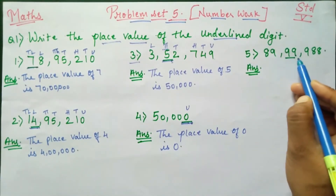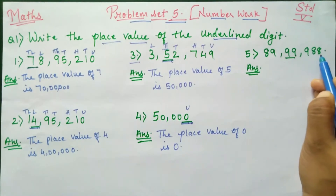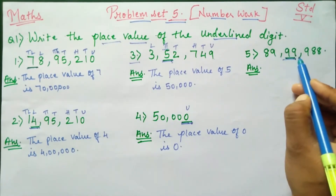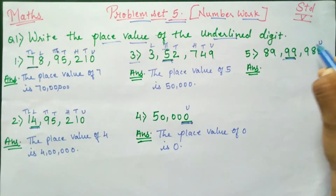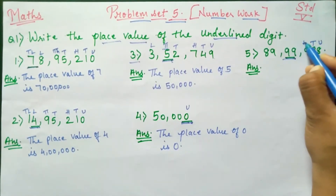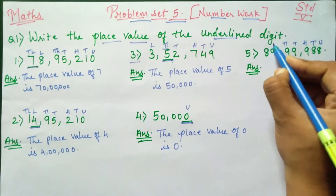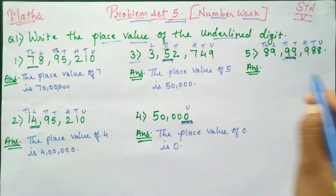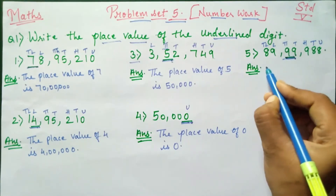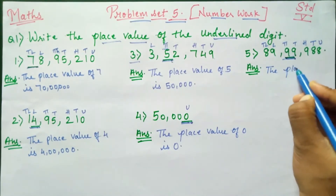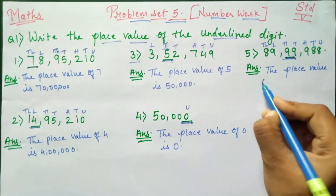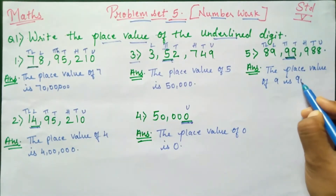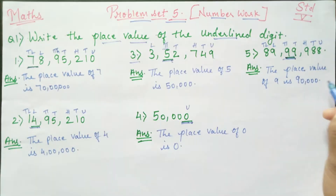Number 5: 89,99,988. Here they have underlined number 9. So to find out the place value, write first all the names of the place values — unit, tens, hundreds, thousands, ten thousands, lakhs, and ten lakhs above the numbers. And then we will get the underlined digit answer is 90,000. Therefore, the place value of 9 is 90,000, that is 9,0,0,0,0.